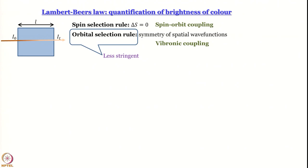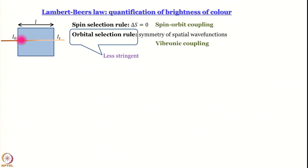Since we are talking about transitions that are more or less probable, we need some experimental means to determine which transition is more probable and which is less probable. An experimental parameter that tells us about the probability of transition is obtained in the form of Lambert-Beer's law. Let us say this rectangle is a sample; the length of the sample along the direction of propagation of light is L, intensity of light impinging on the sample is I₀, and intensity of light transmitted from the sample is I_t.